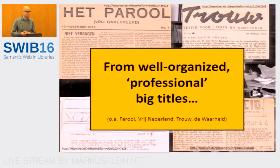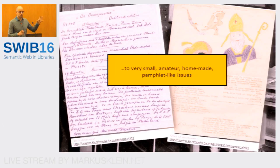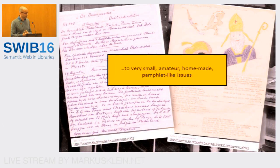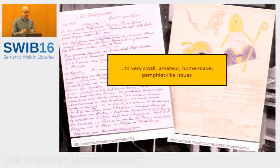I'd like to give some background on these underground newspapers. During the Second World War, the Dutch resistance issued quite a number of illegal newspapers in every shape and form. On one end there were really big, well-organized, nearly professional titles with tens or even hundreds of people working on them, with local and even regional editions. On the other end there were really small, amateur-made, pamphlet-like issues — for instance, a student who built an illegal radio, listened to the BBC in London, wrote down what he heard, and passed the transcript to his neighbors. So from really big to really small, everything was collected.